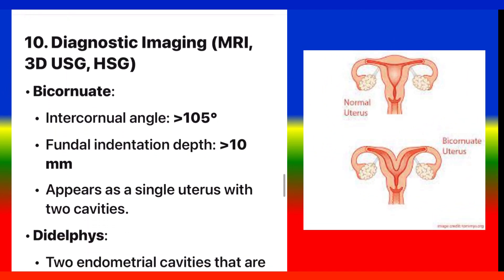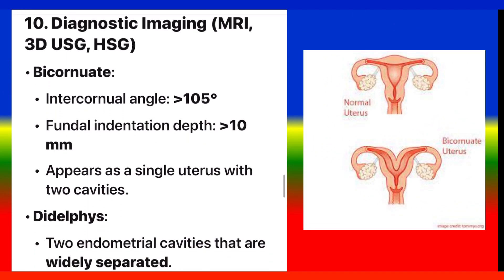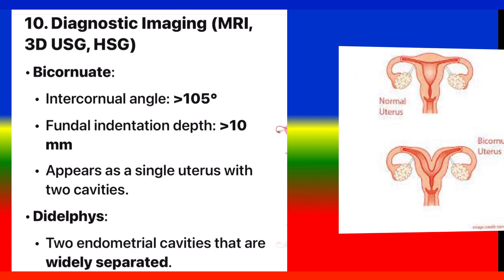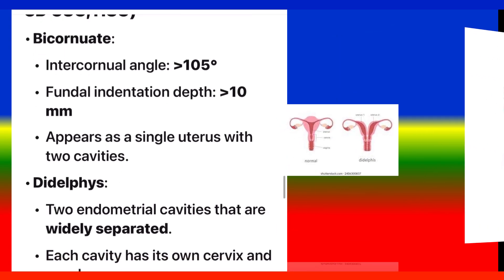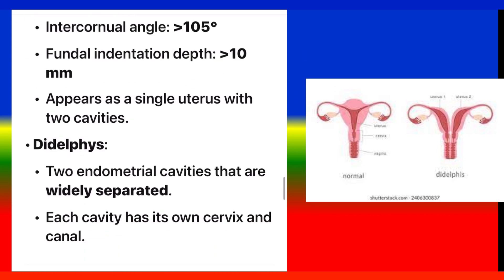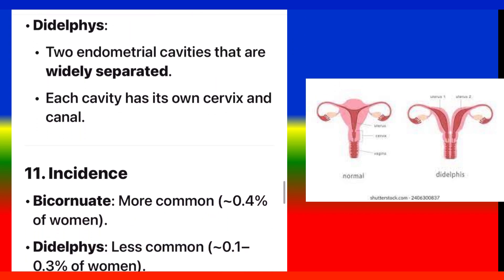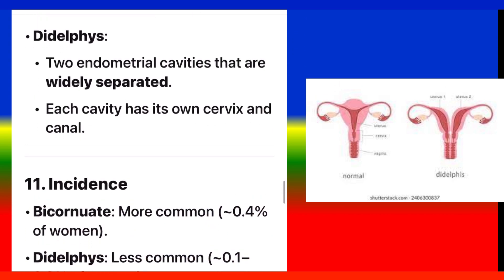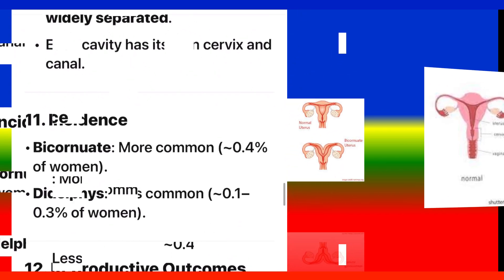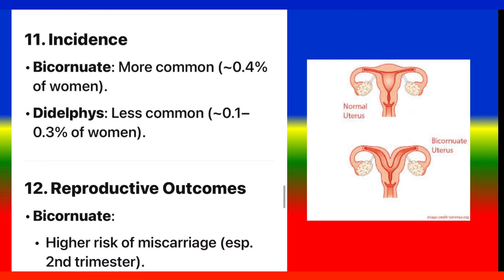Point 10: Diagnostic imaging — MRI, 3D USG, HSG. Bicornuate: intercornual angle greater than 105 degrees, fundal indentation depth greater than 10 mm, appears as a single uterus with two cavities. Didelphys: two endometrial cavities that are widely separated, each cavity having its own cervix and canal.